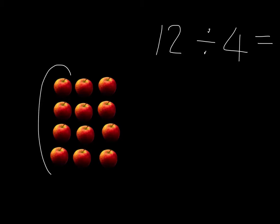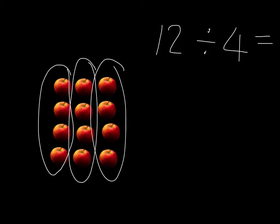So these 4 here will go into the first packet, these 4 here into the next packet, and these 4 into the next packet. And so I can quite easily see that if I group my apples into packets of 4, I end up with 3 packets.